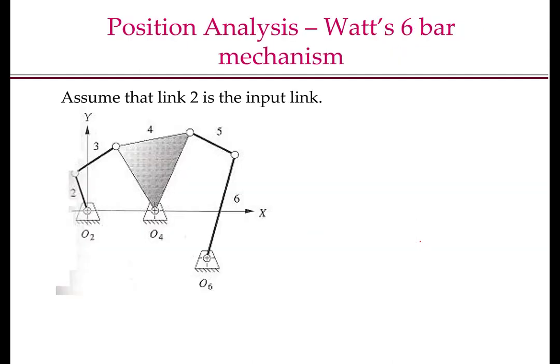Now let us turn our attention to a multi-loop mechanism — in particular, the Watt 6-bar mechanism and the second inversion of the Watt 6-bar mechanism. If you recall, in the graphical synthesis done in class, the 6-bar mechanism with the four-bar mechanism along with the driver dyad was a Watt 6-bar mechanism. In the second inversion of the Watt 6-bar mechanism, the two ternary links are connected to each other by revolute joints. Here, the shaded link and the ground are ternary links, connected at O4.